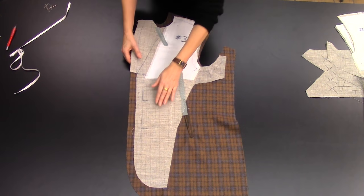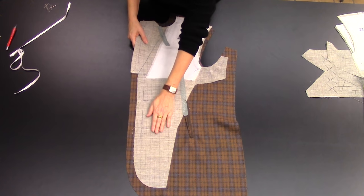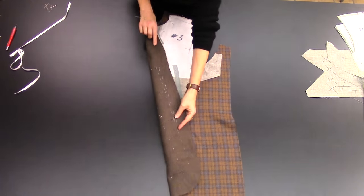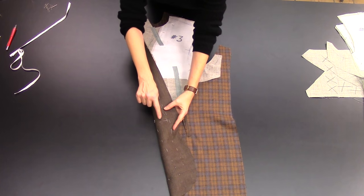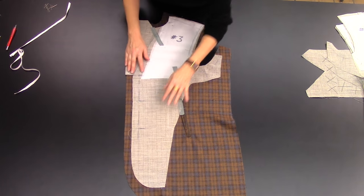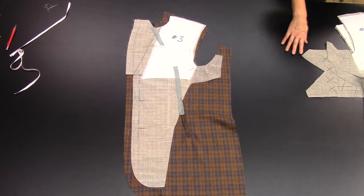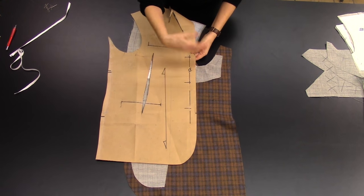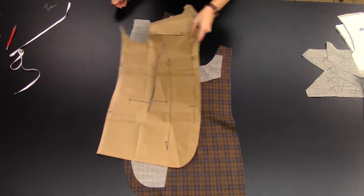The first thing you want to do before applying the canvas to the suit is to thread mark the true center front line and the button placement on the suit coat, on the wool, so that we can find that again once we've covered up the markings with the canvas.